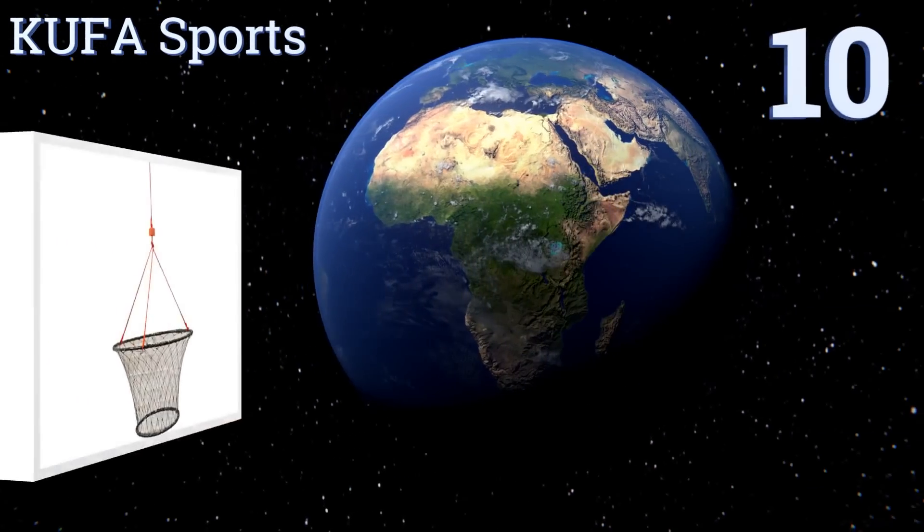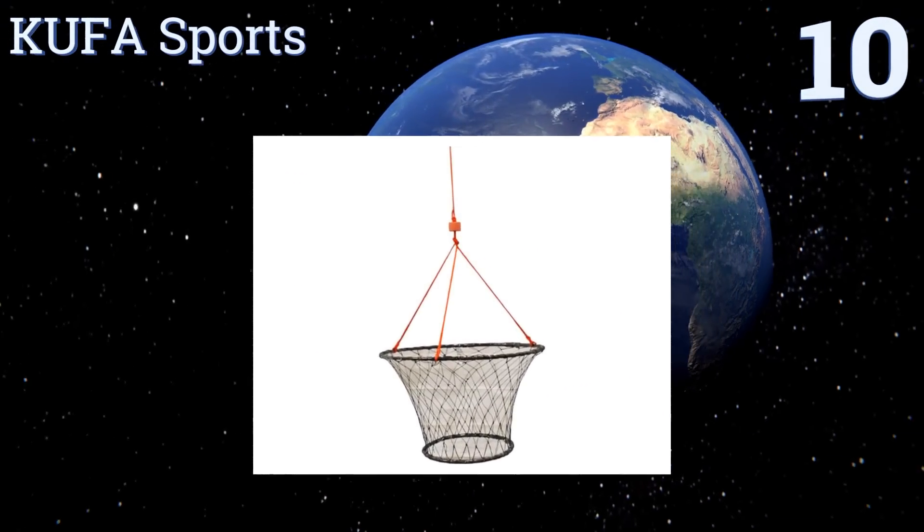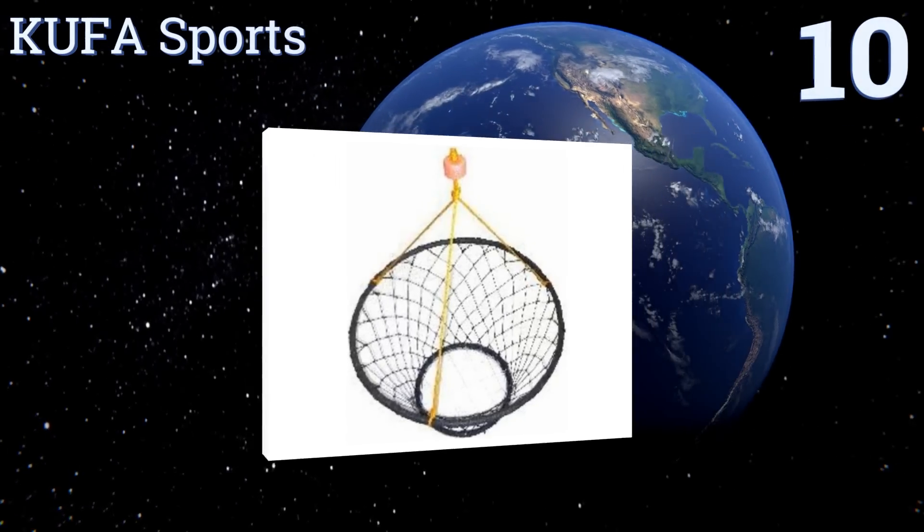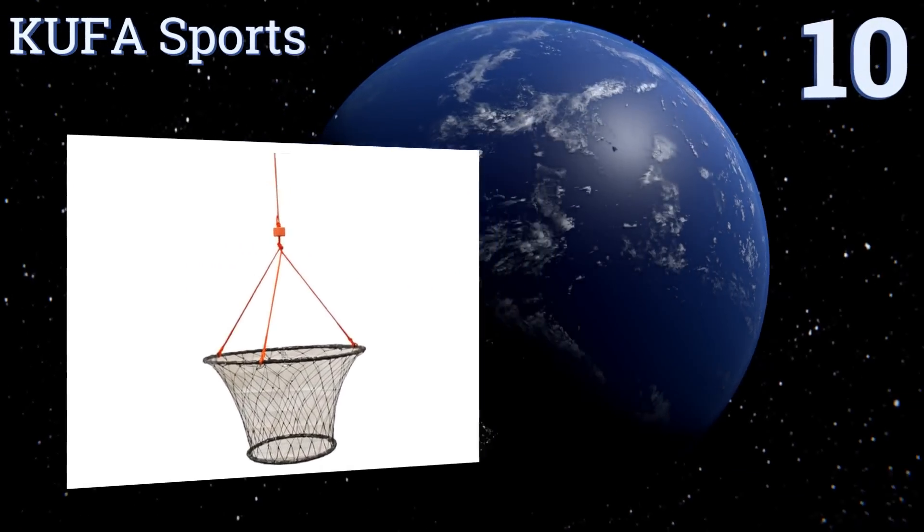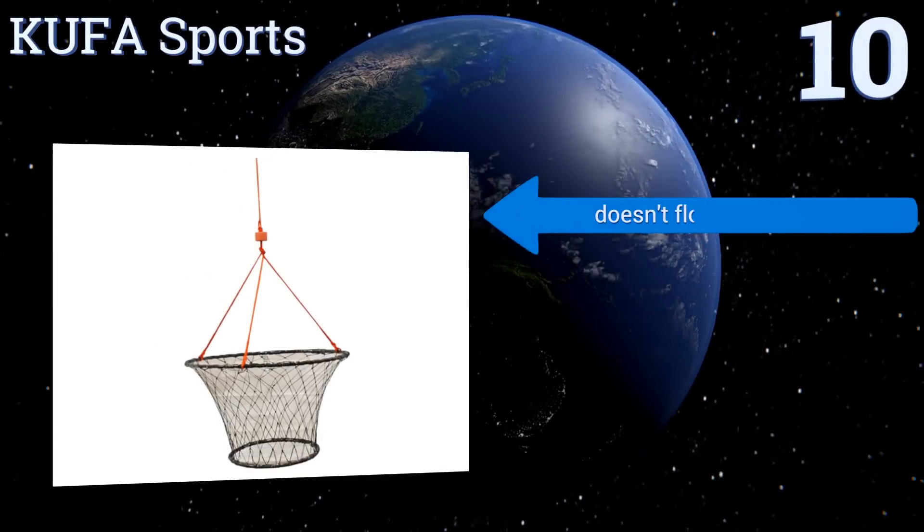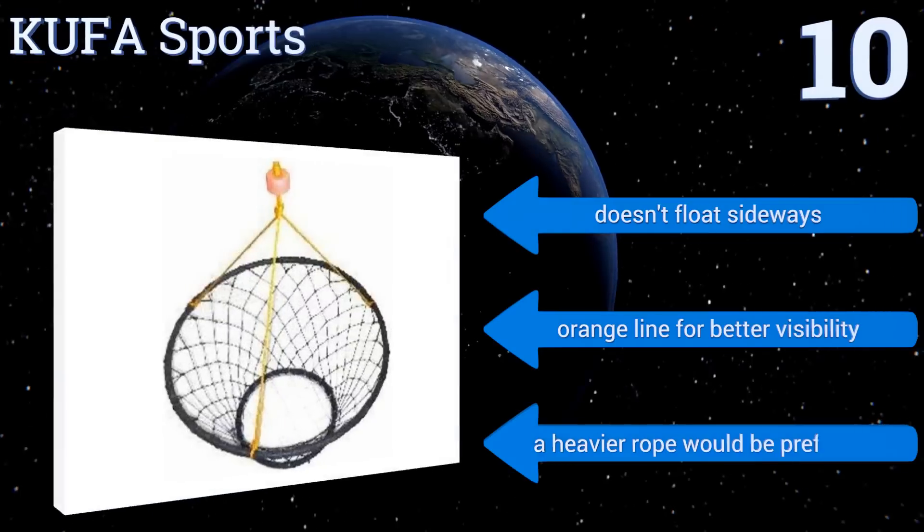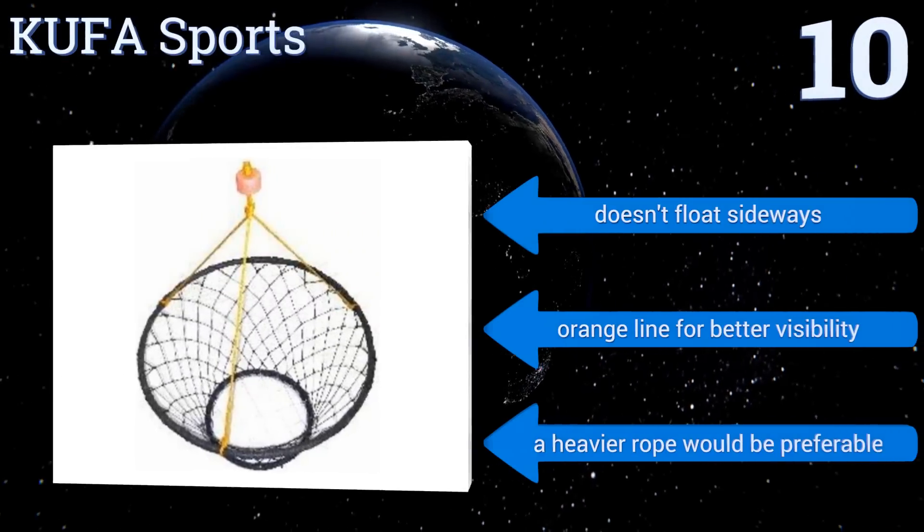Starting off our list at number 10, this option from KUFA Sports uses wrapped steering netting to keep your catch locked up tight. It comes out of the box rigged and ready, so it's great for beginners, but some users have complained that the holes can allow keepers to escape. It doesn't float sideways and has an orange line for better visibility, however a heavier rope would be preferable.